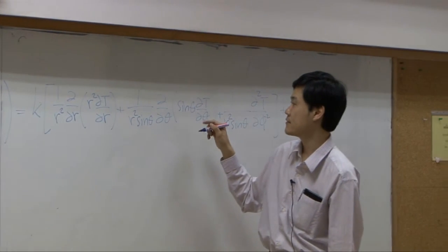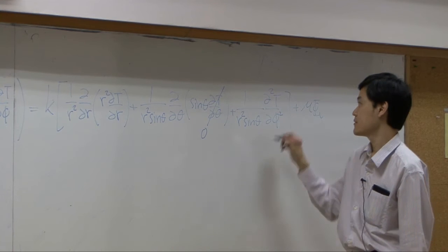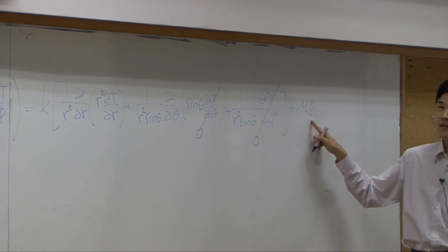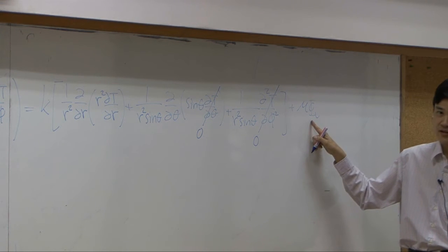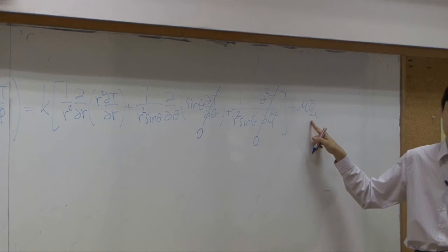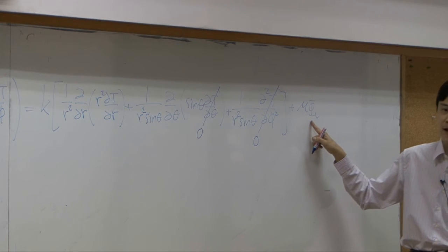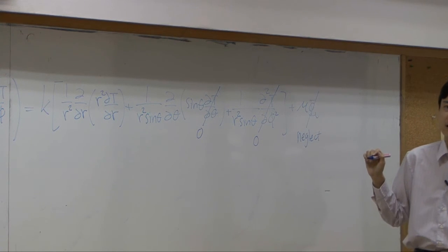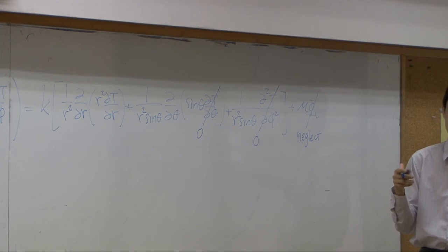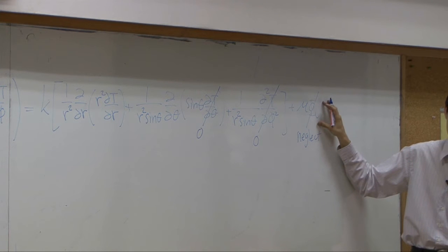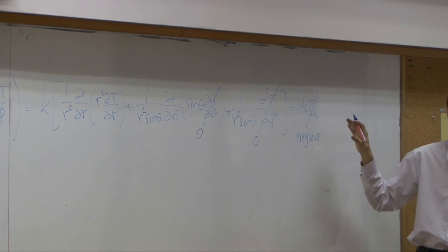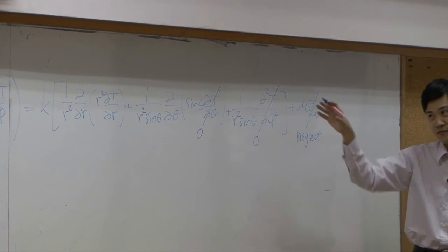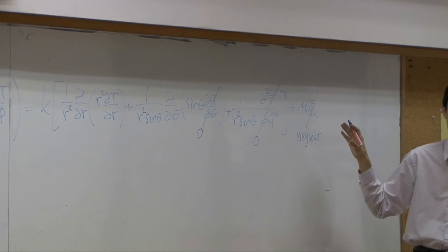T is not a function of theta, neither a function of phi, so those terms drop. For viscous heat or energy dissipation: if you think the fluid flows slowly or is not fast enough, this term can be neglected. If you think viscous heating is significant, you need to consider it — it will be a function of Vr. At the end you may drop it because the equation is already long enough.